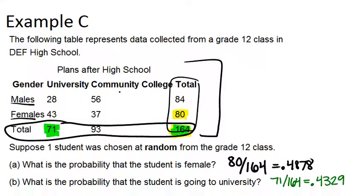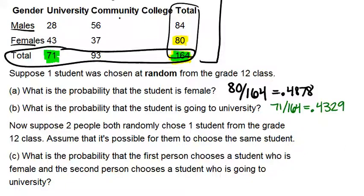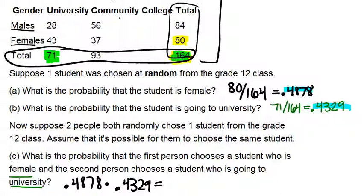Now suppose two people both randomly choose one student from the grade 12 class, and it's possible for them to choose the same student. What is the probability that the first person chooses a female student and the second person chooses a student going to university? Because these two events are independent, we can multiply the two probabilities together: the probability of being female times the probability of going to university. So we multiply 0.4878 by 0.4329, which gives us approximately 0.211, or 21.1%.